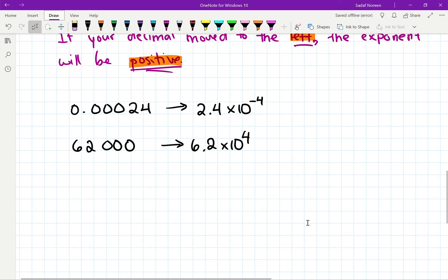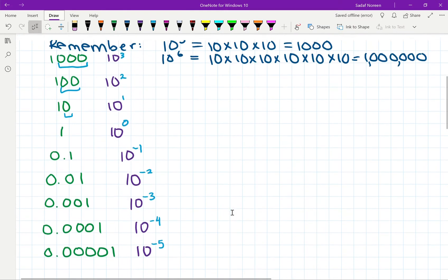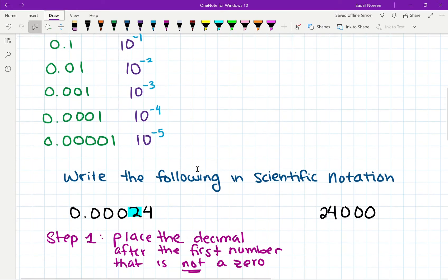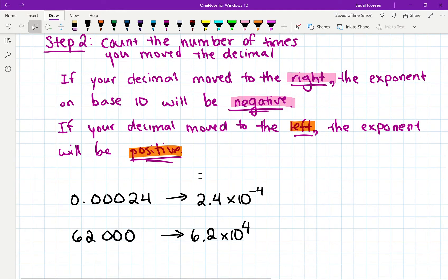Right, so we just covered scientific notation for very, very small numbers, and the idea that we came up with was this: if your decimal moved to the right, the exponent on base 10 is negative, and if your decimal point moved to the left, the exponent is positive.